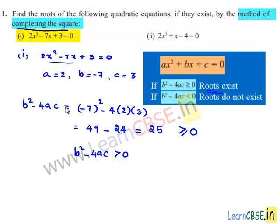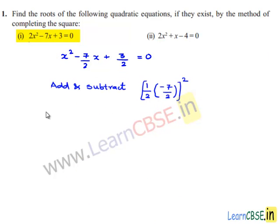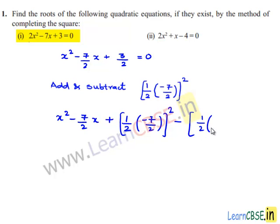Divide the given equation by 2. We get x² minus 7/2 x plus 3/2 is equal to 0. Now add and subtract one-half times the coefficient of x, which is (minus 7/2), whole squared.